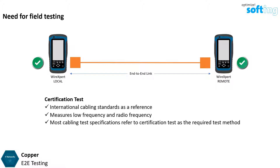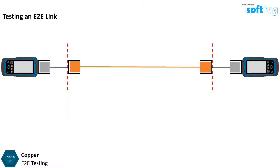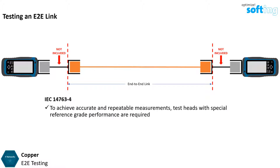Most cabling test specifications refer to certification test as the required test method. Since the ends of an end-to-end link can be terminated in the field, it must be ensured that both ends of the link are included in the measurement. The red dotted lines depict the reference plane, which delimits the part of the cabling included within the measurement. It is important that the testers and any measurement cables are not included, but the sockets at the end of the measurement cables are included. IEC 14763-4 specifies that to achieve accurate and repeatable measurements, test heads with special reference grade performance are required.